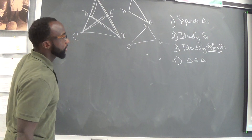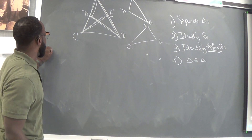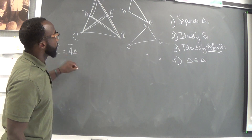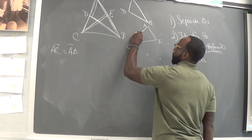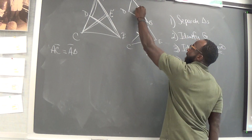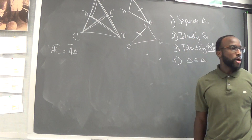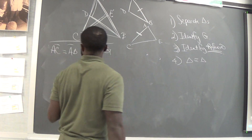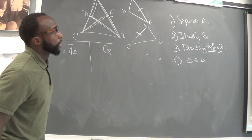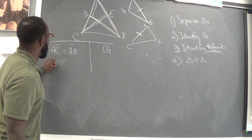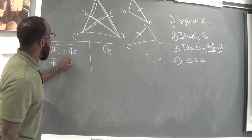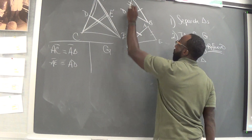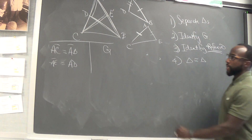Next thing, number two: identify what was given. AC is congruent to AB — AC is right here, congruent to AB. You mark what's congruent. The next given is AE is congruent to AD. That's given.